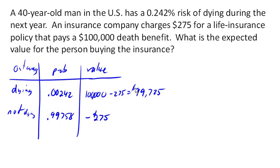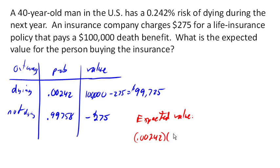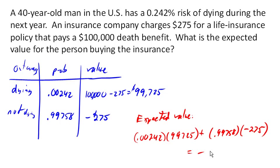So our expected value is the probability of dying multiplied by the value of that outcome, plus the probability of not dying times its value. Altogether, that gives us a negative value of $33. In other words, if we had thousands of 40-year-old men, then on average each man will have lost $33.